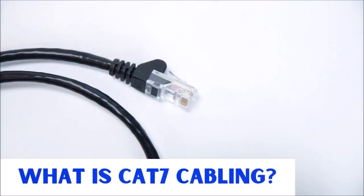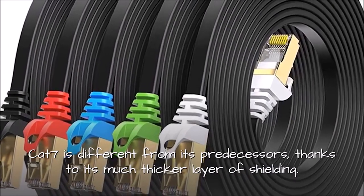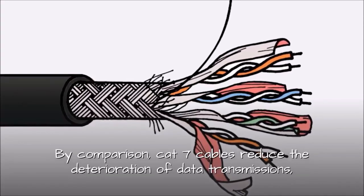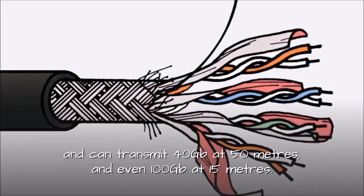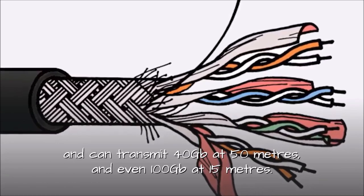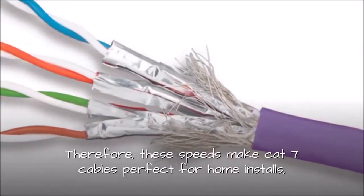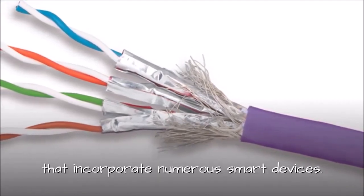What is CAT7e cabling? CAT7e is different from its predecessors thanks to its much thicker layer of shielding. By comparison, CAT7e cables reduce the interior of data transmissions and can transmit 40 gigabits at 50 meters and even 100 gigabits at 15 meters. Therefore, these speeds make CAT7e cables perfect for home installs that incorporate numerous smart devices.